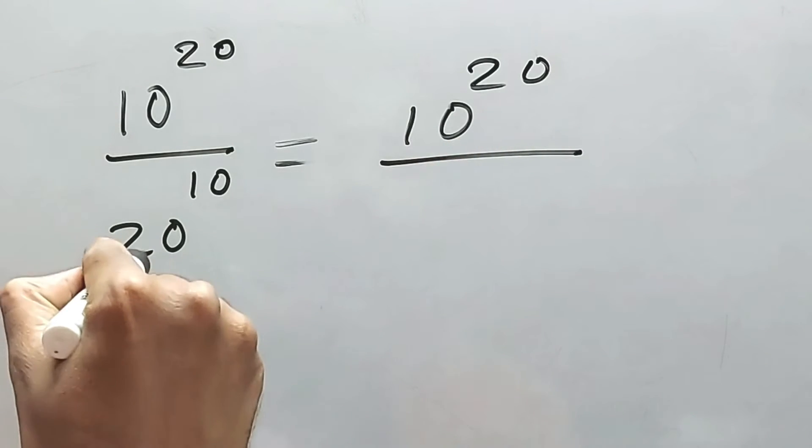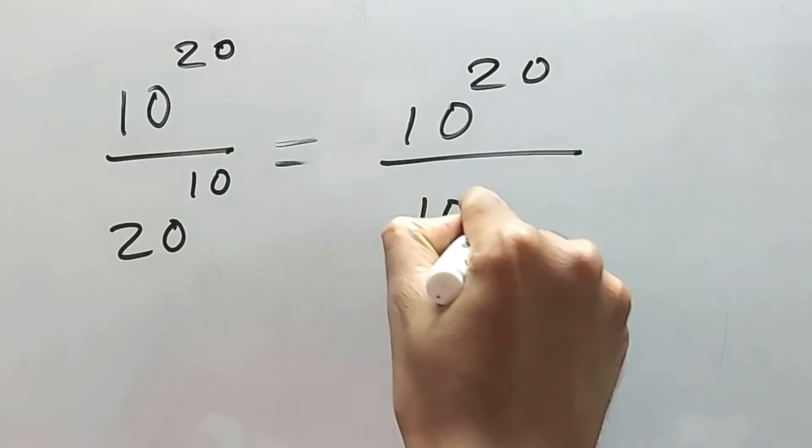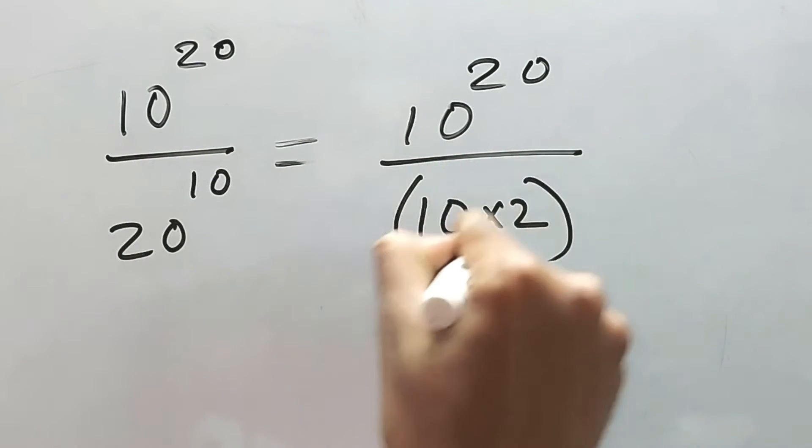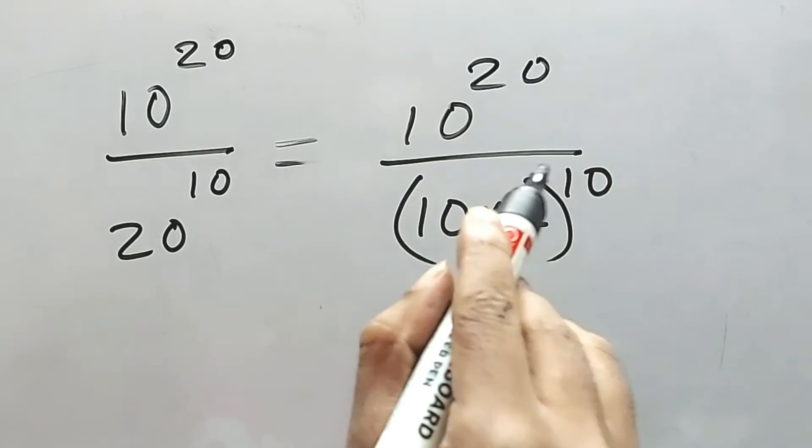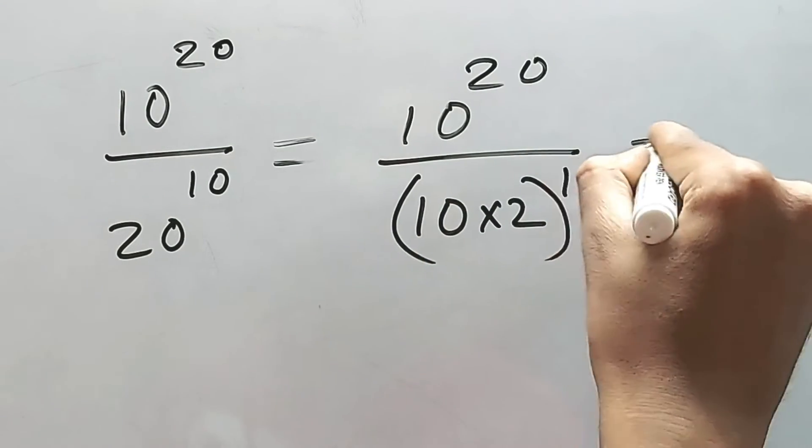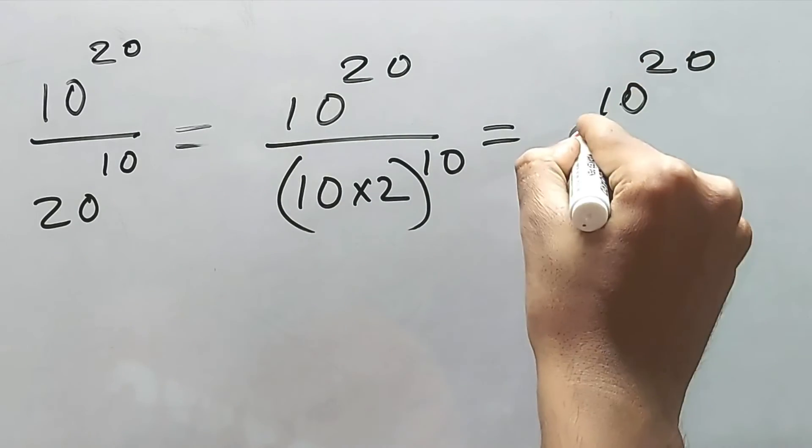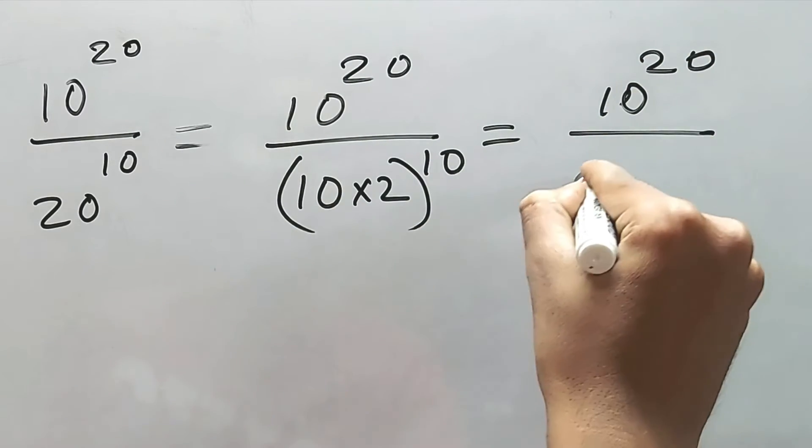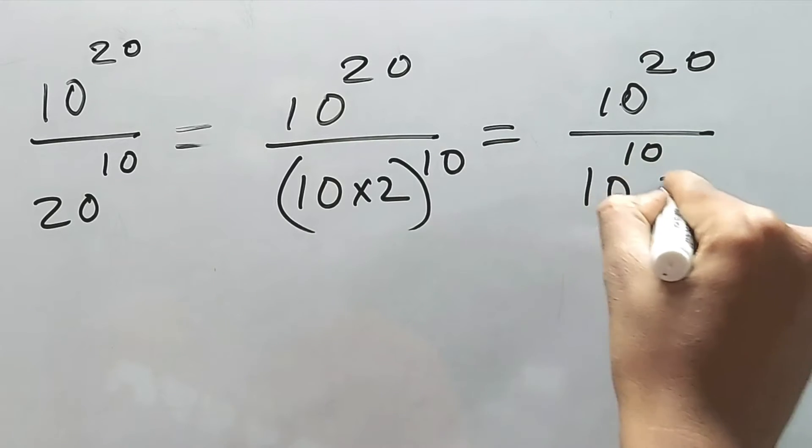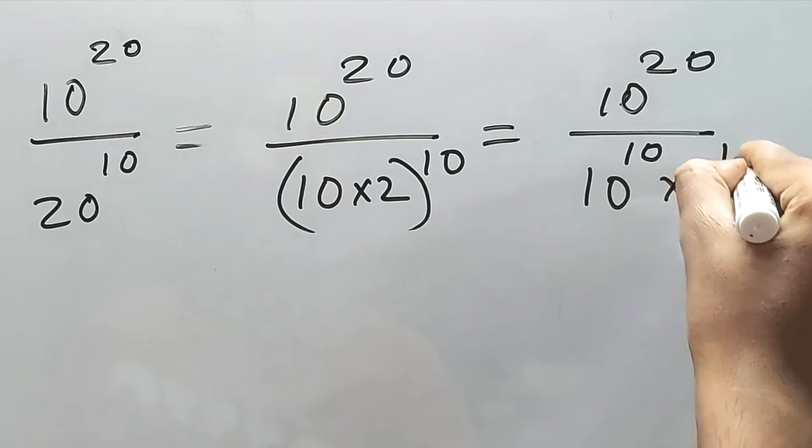So see, this 10 to the power 20, this is 10 into 2, right? 10 into 2 to the power 10. Now, again, simple thing. 10 to the power 20 and this is 10 to the power 10 into 2 to the power 10.